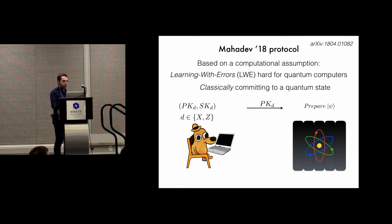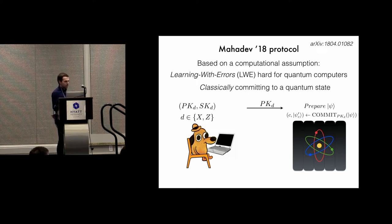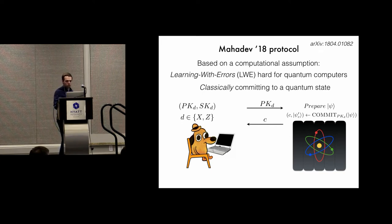The verifier sends the public key to the prover, and the prover is instructed to run this commitment algorithm — an efficient quantum algorithm applied to the quantum state psi that it needs to commit to. It takes in the public key sent by the verifier and produces two things: a classical bit string c, which is the classical commitment string sent to the verifier, and also a new quantum state psi, which the prover will then use to produce the reveal string when we want to reveal the commitment.